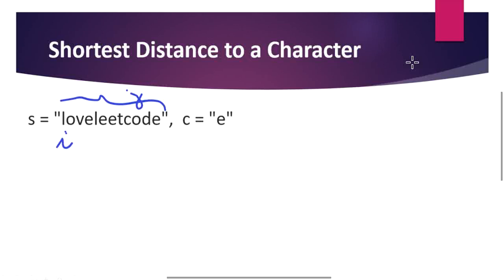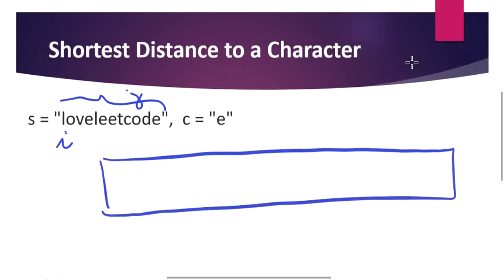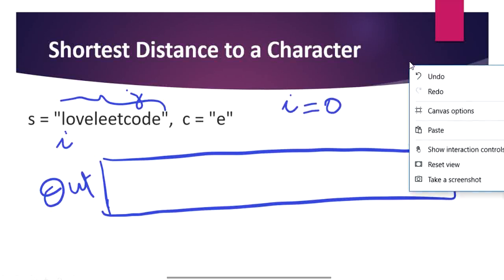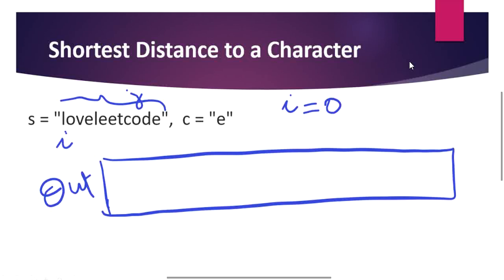Let's see with an example. Our pointer i starts at position 0, and our output array is the same size as the string. With i at 0, we scan the complete string to find the shortest distance between l and e. We scan every element checking for e, and find the first e at position 4. The difference between 0 and 4 is 3, so we update to 3. Moving on to the next e at position 5 and 6, the distance is larger, so we fix the value at 3.